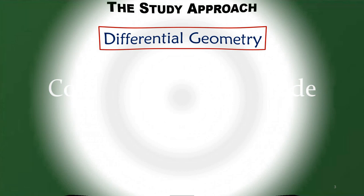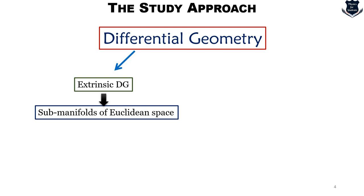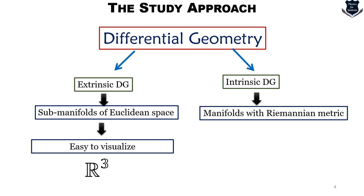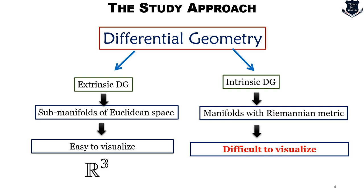Differential geometry itself can be divided into two parts. The first is extrinsic differential geometry, which basically consists of sub-manifolds of Euclidean space — these are easy to visualize because they are mostly on R3 or 3-dimensional space. The intrinsic geometry deals with manifolds containing the Riemannian metric and other metric spaces, and these are difficult to visualize because they are very abstract.